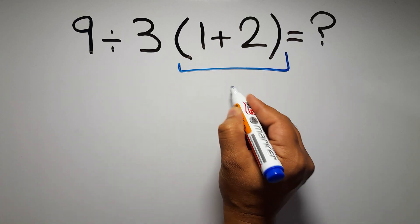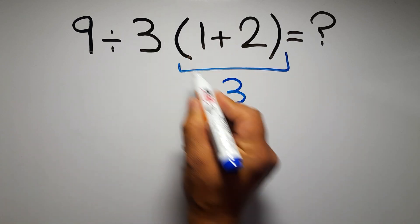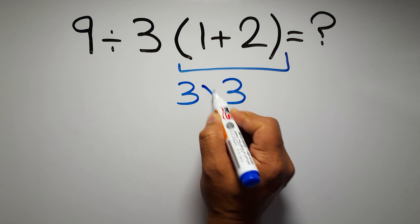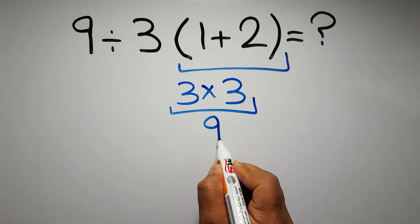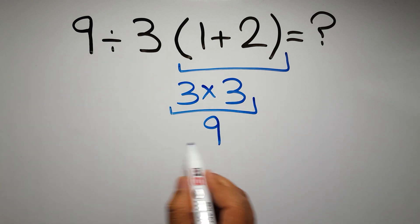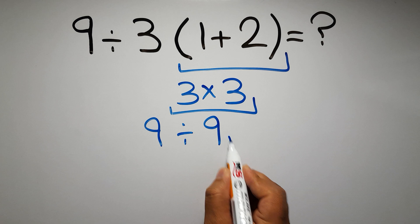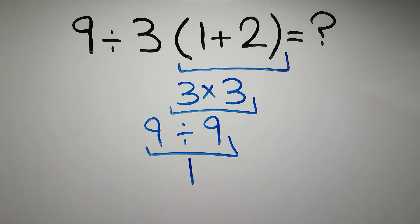One plus two gives us three and three times three equals nine, so nine divided by nine gives us one. But this answer is not correct because according to the order of operations, first we have to